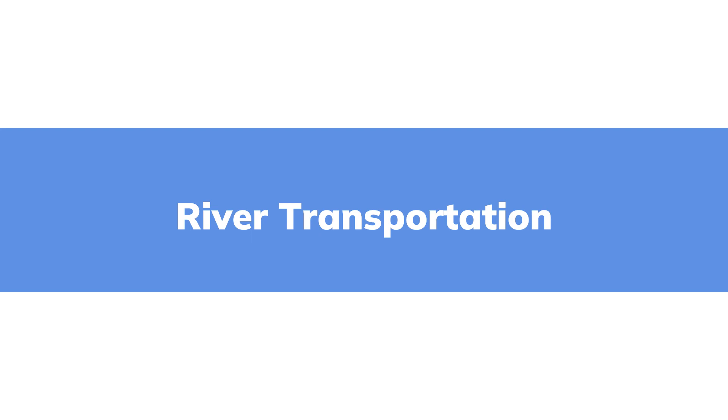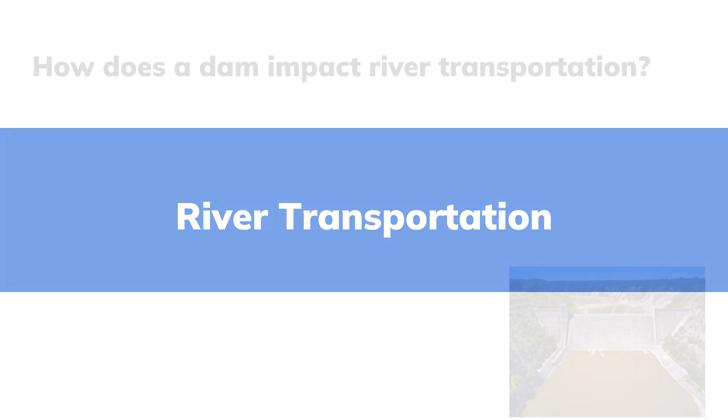River transportation is probably the most straightforward one. A dam is a wall, and if you're trying to transport something and you meet a wall, you can no longer transport that thing. You can't go around it, you can't go over it — it's a dam, you just have to stop. So how does a dam impact on river transportation? It stops it, mostly.